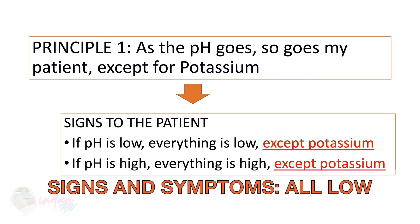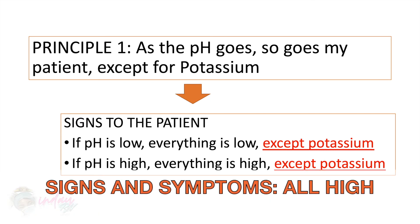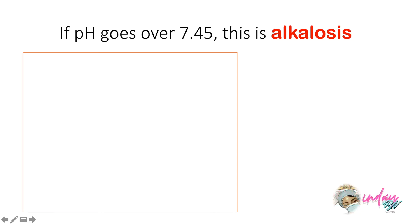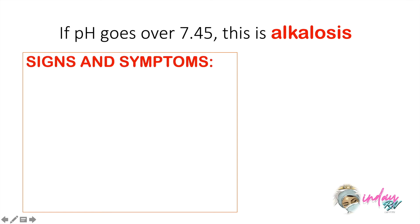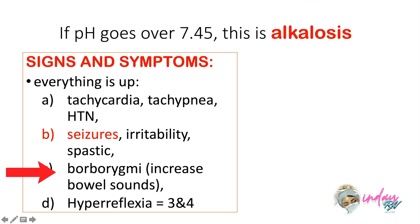For example, the patient may go into comatose. While if the pH is high, everything is high, so the patient may be experiencing irritability. So if the pH goes above 7.45, this is already alkalosis. The signs and symptoms you can see in the patient are all elevated — like tachycardia, tachypnea, and hypertension. Since we are speaking about alkalosis, the patient may suffer from seizures, irritability, and spastic muscle. Also in the GI area, borborygmy will happen, or there is increased bowel sound. Everything in alkalosis is high.